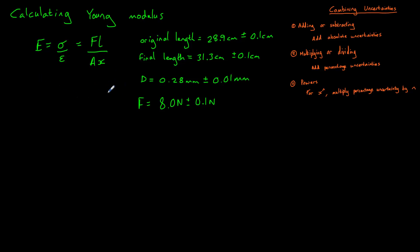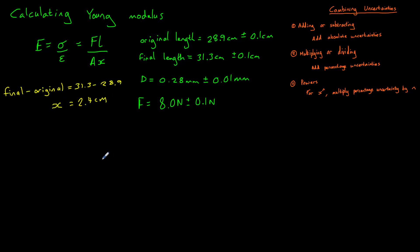The first thing we need to do is work out the extension of the wire. We subtract the original length from the final length: 31.3 − 28.9 = 2.4 centimetres. Because we were subtracting, we apply Rule 1 and add the absolute uncertainties: 0.1 + 0.1 = 0.2. So the extension X = 2.4 ± 0.2 centimetres.